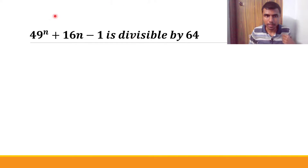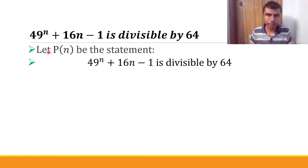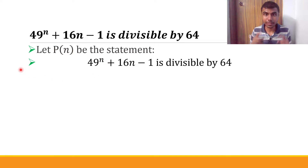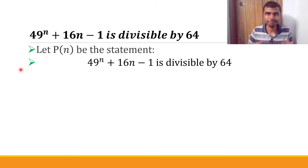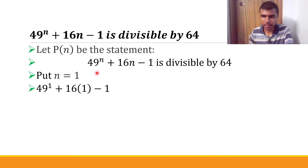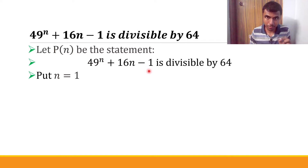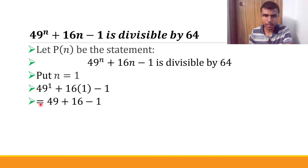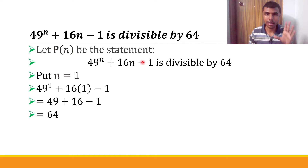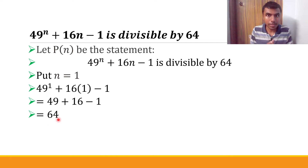This is our question. The given statement is this — I'm going to take it as P. Now, first we need to check whether the given statement is true for n equal to 1. For that, just put n as 1. I have 49^n + 16n - 1. If I put n as 1, I get 49^1 + 16×1 - 1, which gives 64.